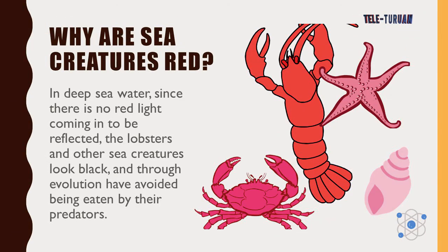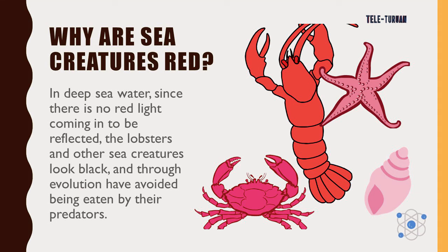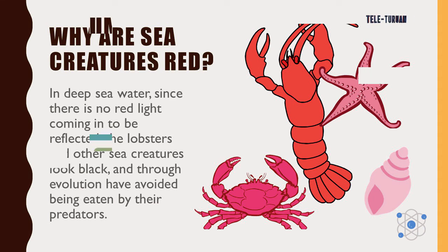Why are sea creatures red? In deep seawater, since there is no red light coming in to be reflected, lobsters and other sea creatures actually look black, and through evolution they have avoided being eaten by their predators.